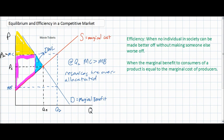In this video lecture, we have shown that at any price and quantity combination other than QE and PE, one group is made better off only at the expense of someone else being made worse off. At a quantity lower than QE, marginal benefit exceeds marginal cost and resources are under-allocated. At a quantity greater than QE, marginal cost exceeds marginal benefit and resources are over-allocated. Only at QE and PE is total consumer and producer surplus maximized, meaning resources are allocated in the best possible way and efficiency is maximized in a competitive market.